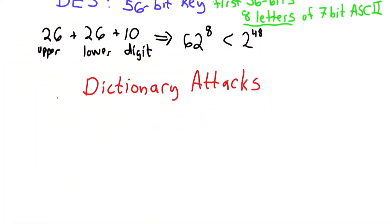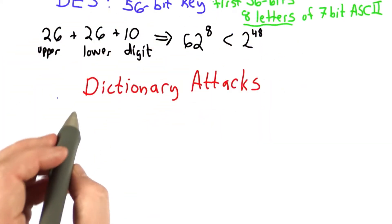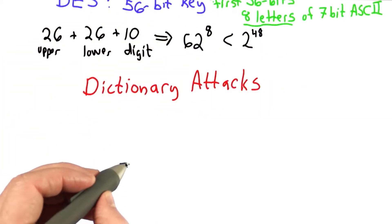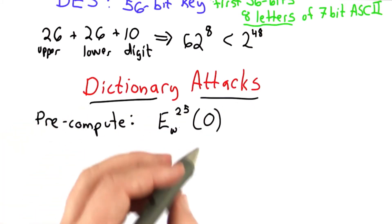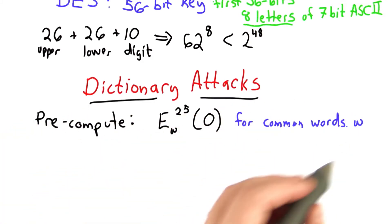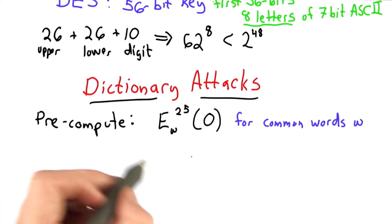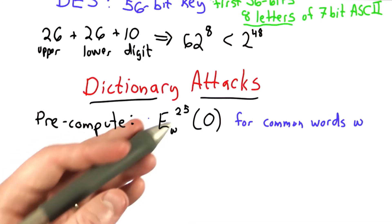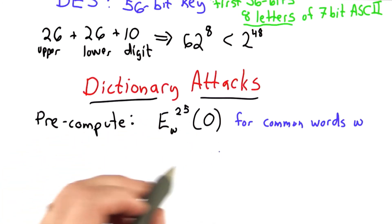The reality is even worse than this, that a motivated attacker can pre-compute a dictionary, pre-compute this value for a set of common words, store those pre-computed values, and then every new password file that's compromised, check all the passwords against this list and have a good likelihood of finding some accounts that can be broken into.